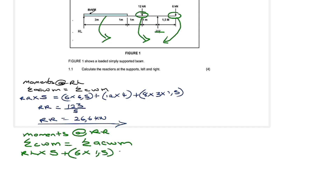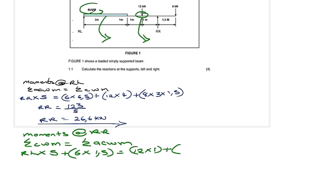The anti-clockwise moments: we have 12 kN at a distance of 1 from RR. So: 12 × (1). Plus we need to deal with the UDL of the bar — 8 kN times the length of that bar, which is 3.